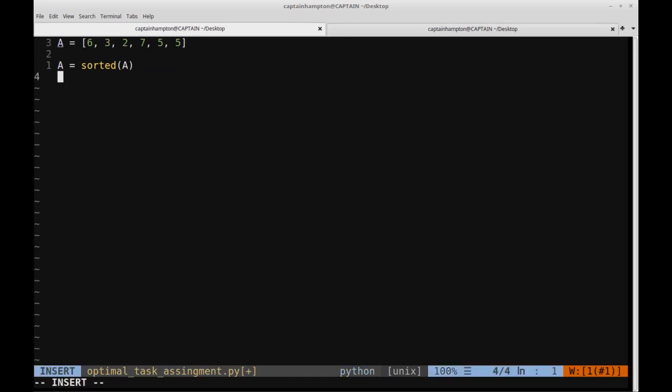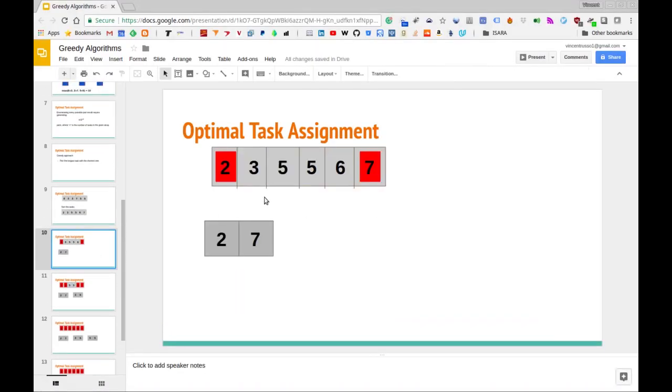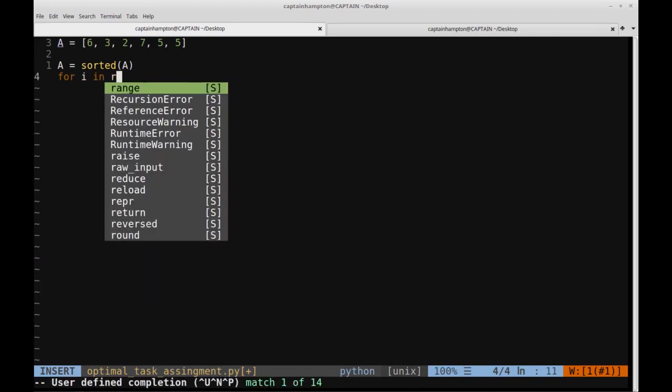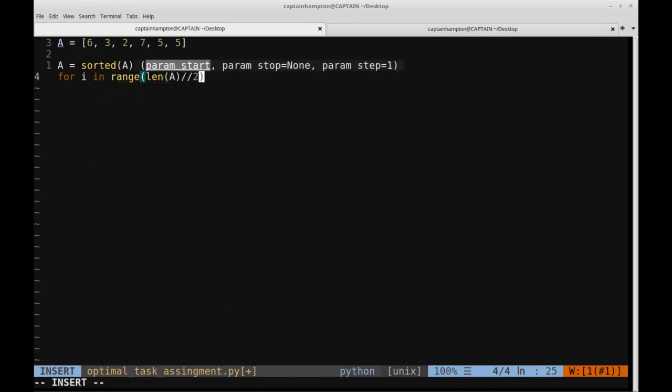So now what we want to do is loop through the length of the array divided by two, because we're essentially attacking the array on both ends. We're going to access the index from the front and the index from the back, and kind of pincer through the array. So we're going to have a for loop - for i in range, length of A divided by two - we're going to print the optimal pairing. We want to print the pairs such that the amount of time it takes to complete all of the tasks is minimized. For this example, we're just going to print out the pairs.